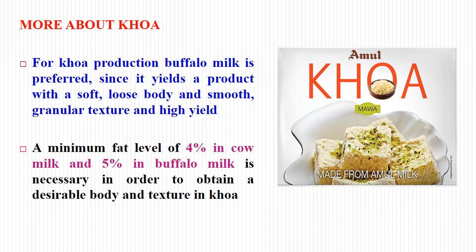For Khoa production, buffalo milk is preferred since it yields a product with a soft, loose body and smooth granular texture and high yield. A minimum fat level of 4% in cow milk and 5% in buffalo milk is necessary in order to obtain a desirable body and texture in Khoa.